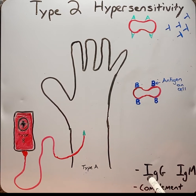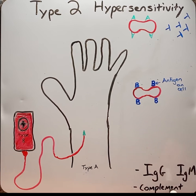The antibodies involved are either IgG or IgM, and the destructive component of the immune system is either complement proteins or phagocytic cells.